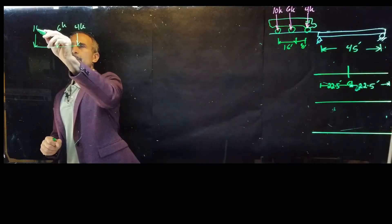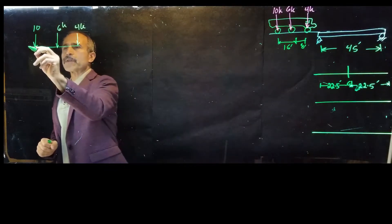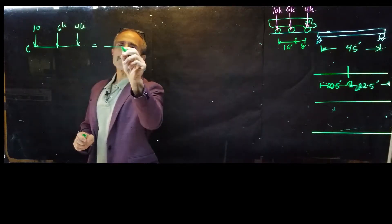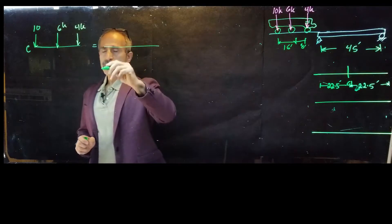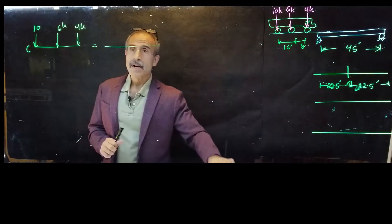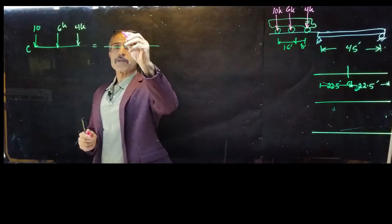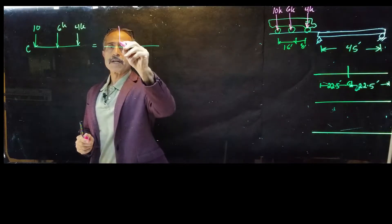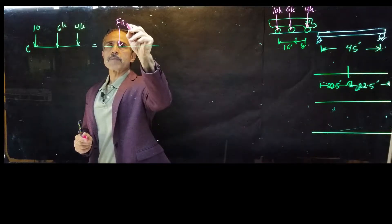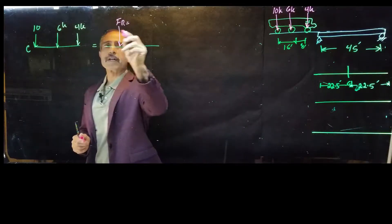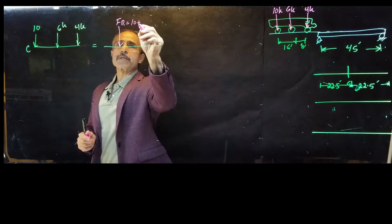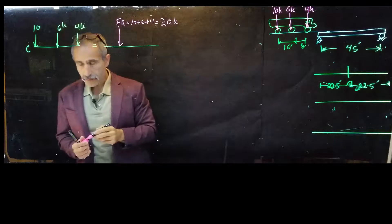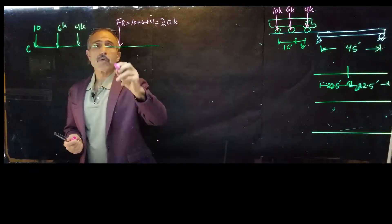Let's call this point C. We can replace the axle loads with one resultant force R, which is going to fall between these loads. R equals 4 plus 6 plus 10, which equals 20 kips. Now we need to find the distance to the resultant.